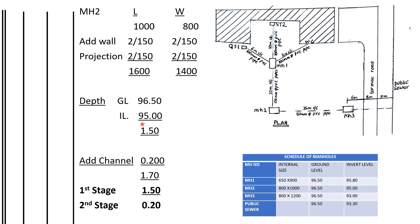For the depth of manhole two, the ground level is 96.5 and the invert level is 95.0, giving a difference of 1.5 meters. We then add the channel allowance: 50mm for pipe thickness and preparation, plus 150mm of concrete, totalling 200mm or 0.2 meters. So the total depth is 1.5 plus 0.2 equals 1.7 meters.